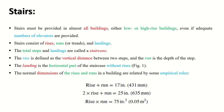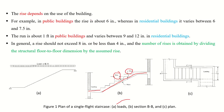The normal dimensions of rises and runs are related by empirical rules: rise plus run equals 17 inches; 2 times rise plus run equals 25 inches; and rise times run equals 75 square inches. The rise depends on the use of the building — in public buildings it is about 6 inches, in residential buildings it varies between 6 and 7.5 inches. The run is about 1 foot in public buildings and between 9 and 12 inches in residential buildings. In general, a rise should not exceed 8 inches or be less than 4 inches.